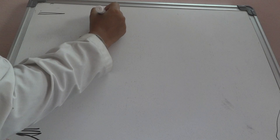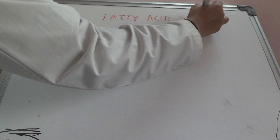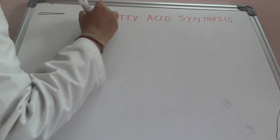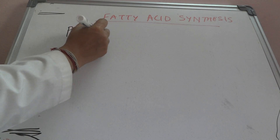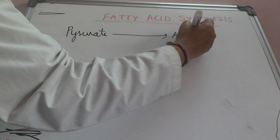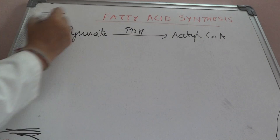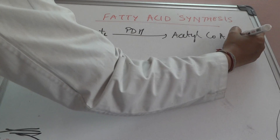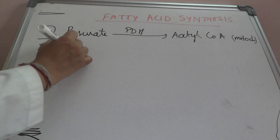Hi everybody, today we discuss a very important and very big metabolism: fatty acid synthesis. Coming to fatty acid synthesis, first is the formation of pyruvate through glycolysis. This pyruvate forms acetyl-CoA in the mitochondria via the enzyme pyruvate dehydrogenase. This is the first reaction.